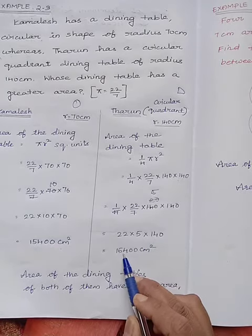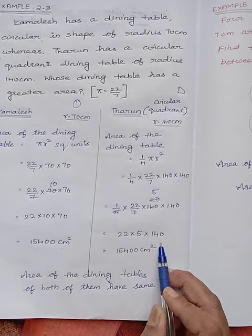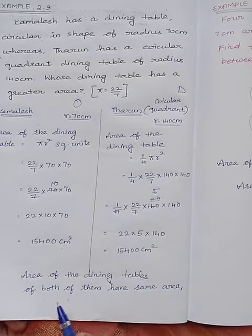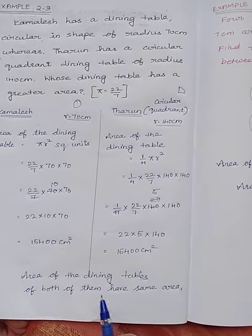So remaining you have 22 × 5 × 140. So when you multiply, your answer is 15400 cm². So the area of the dining tables of both of them have the same area.